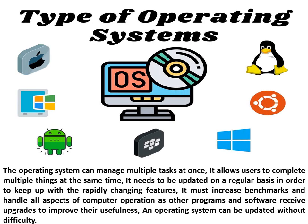The operating system can manage multiple tasks at once. It allows users to complete multiple things at the same time. It needs to be updated on a regular basis in order to keep up with rapidly changing features. It must increase benchmarks and handle all aspects of computer operation as other programs and software receive upgrades to improve their usefulness. An operating system can be updated without difficulty.